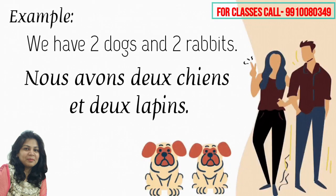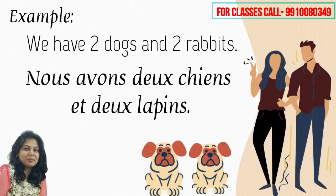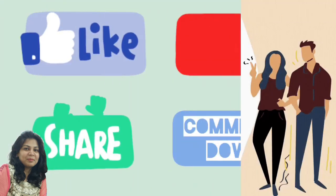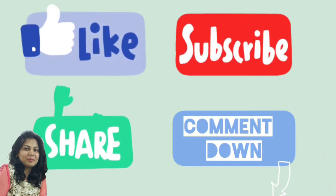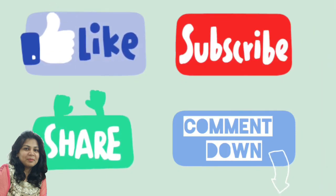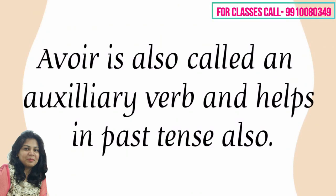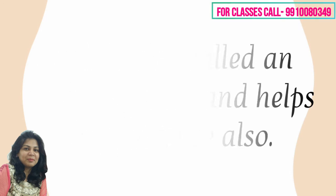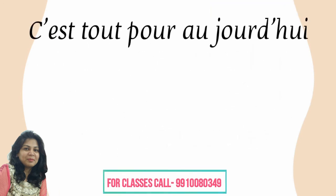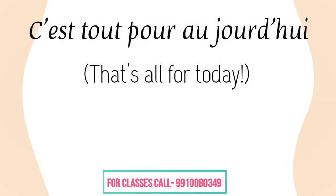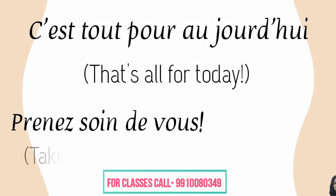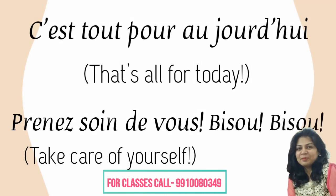I hope you all have understood how to use this verb while making sentences. Try to create a few more sentences by yourself, and if you need any help, do write in the comment section. Avoir is also called an auxiliary verb and also helps in making the past tense — that we are going to cover later. C'est tout pour aujourd'hui — that's all for today. Prenez soin de vous — take care of yourself. Bisou bisou, bye bye!